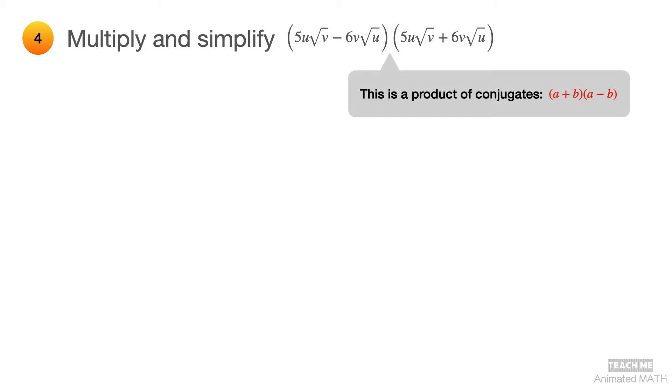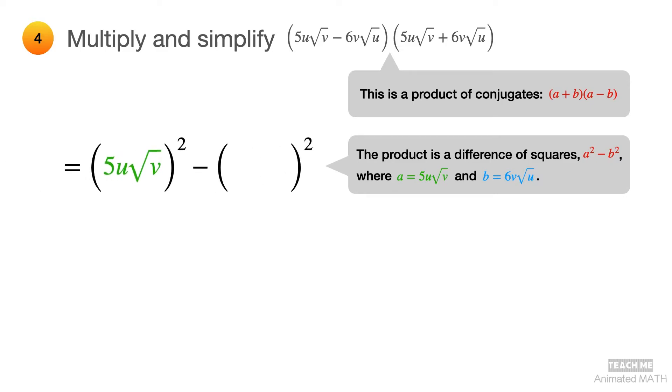This is a product of conjugates which follows the pattern a plus b times a minus b. The product is a difference of squares, which is a squared minus b squared. And in this case, a is equal to 5u square root of v, and b is equal to 6v square root of u. Try not to get confused between the variables u and v when you simplify the expression. And the final answer is 25u squared v minus 36uv squared.